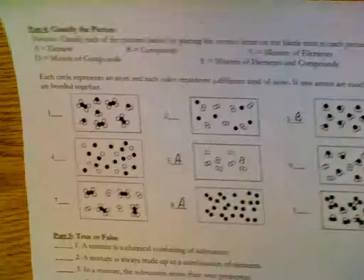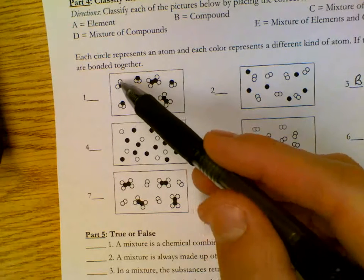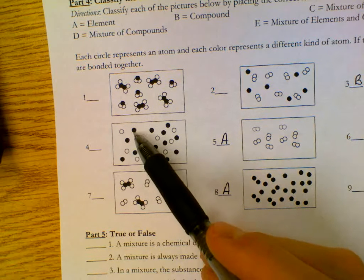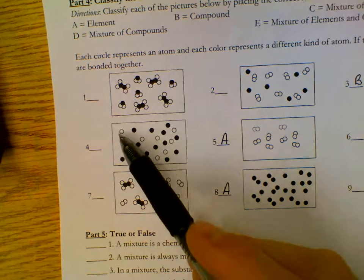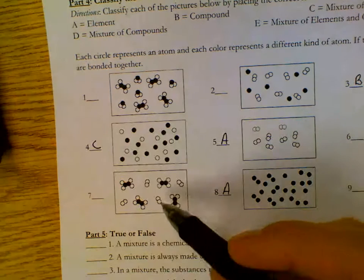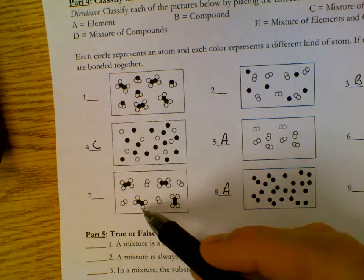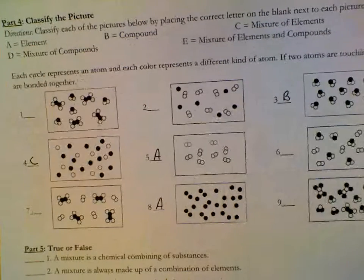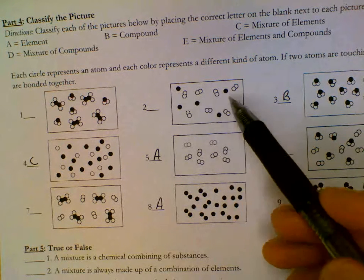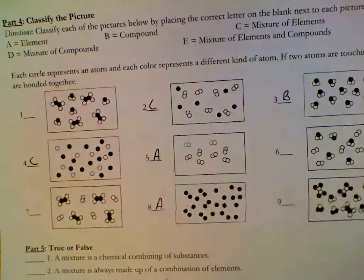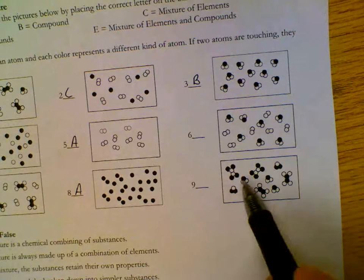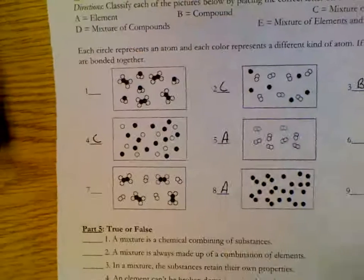Choice C, a mixture of elements. So, it has to be just elements. These are compounds. Two different colors of circles attached. We have, for number four, we have opens and closed. That's all we have. So, this is one type of element. This is the second type of element. This is choice C, a mixture of elements. This is an element, but these are compounds because they have two different types connected to each other. Here we have elements because they're the same connected to each other. And we have another set of elements, the darks, which makes this choice C. Six has compounds that can't be choice C. Nine has compounds, so it can't be choice C.